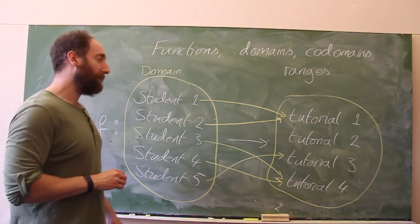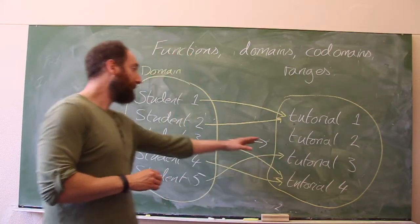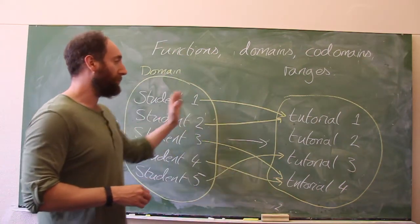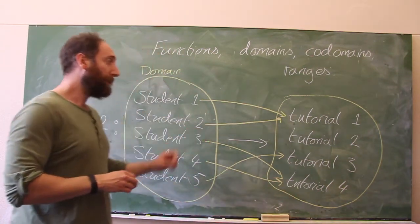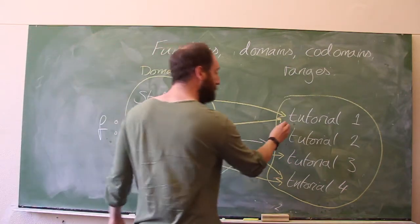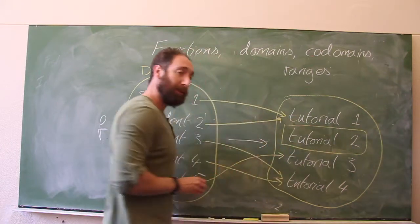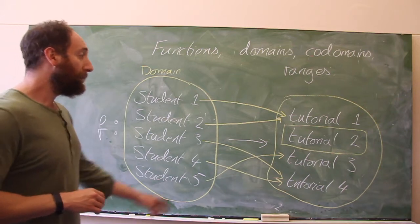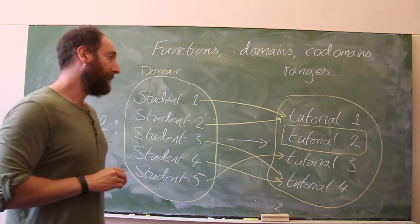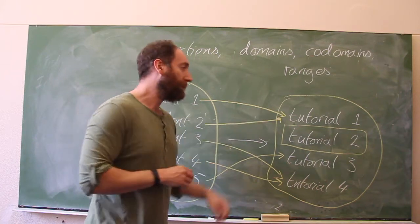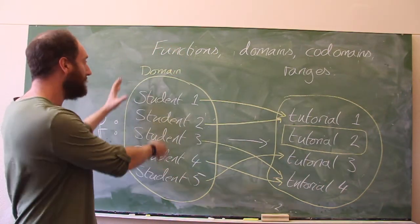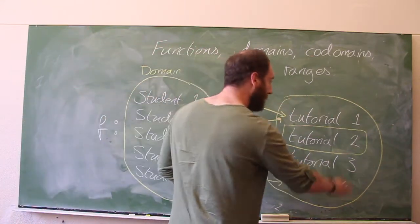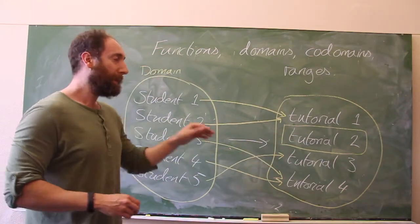However, what we notice here is that tutorial 2 is not within the values of the tutorials that we're mapping students into. So tutorial 2 is not within the range of this function. I've got to be a little bit careful here — tutorial 2 is in the co-domain. What this really means is the set of possible mappings which we could have had from the domain into our larger set. So the entire set — tutorial 1, tutorial 2, 3, and 4 — this is the co-domain.